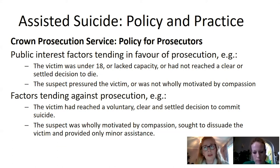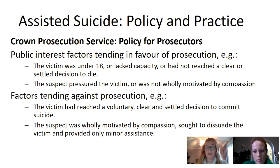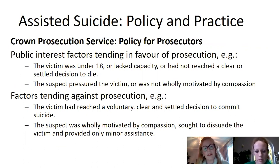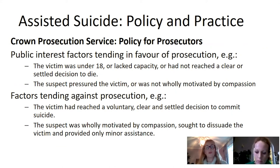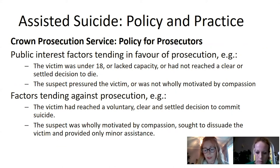Factors tending against prosecution would be if it was very clear that the victim had reached a voluntary, clear and settled decision to commit suicide, and if the suspect appeared to be wholly motivated by compassion — for example, if they sought to dissuade the victim from taking their own life and provided only minor assistance. This would suggest it was not in the public interest to prosecute that particular person.